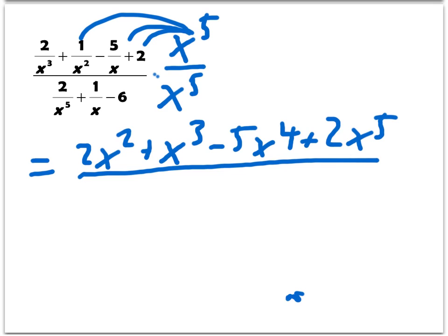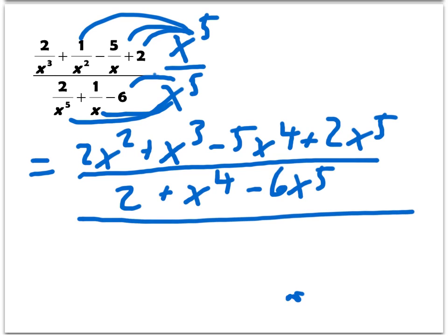In the denominator, distributing here we'll get just a 2. Distributing there we get x to the fourth power, and then distributing here we get minus 6x to the fifth. Still a somewhat complicated expression, and it's possible we could factor this some more. But we've gotten rid of those fractions within fractions, so we're going to call that good for now.